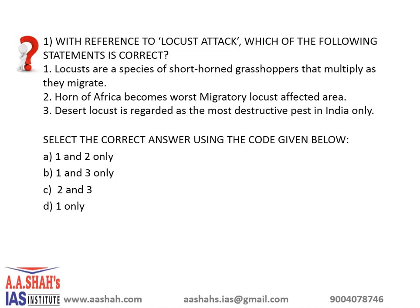With reference to locust attack, which of the following statements are correct? First, locusts are a species of shorthorn grasshoppers that multiply as they migrate. Second, Horn of Africa becomes the first migratory locust affected area. Third, desert locust is regarded as the most destructive pest in India only. Select the correct answer: A) 1 and 2 only, B) 1 and 3 only, C) 2 and 3, D) 1 only.